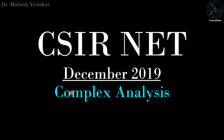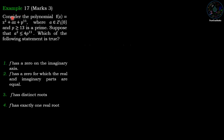Welcome friends. In this video we are going to discuss the problem of CSIR NET December 2019 problem of complex analysis. Consider the polynomial f(z) = z² + az + p¹¹, where a belongs to ℤ \ {0} and p ≥ 13 is a prime.